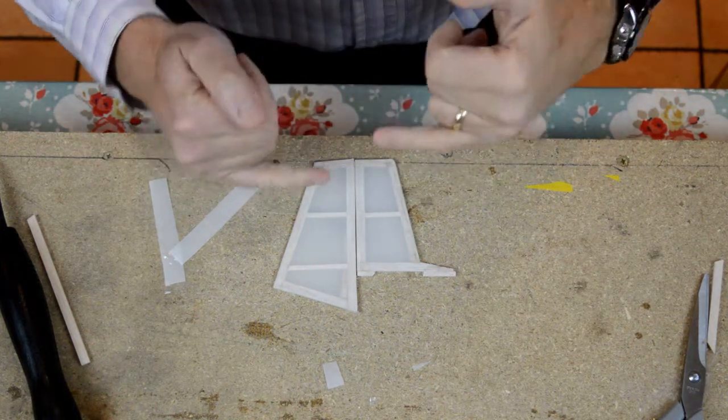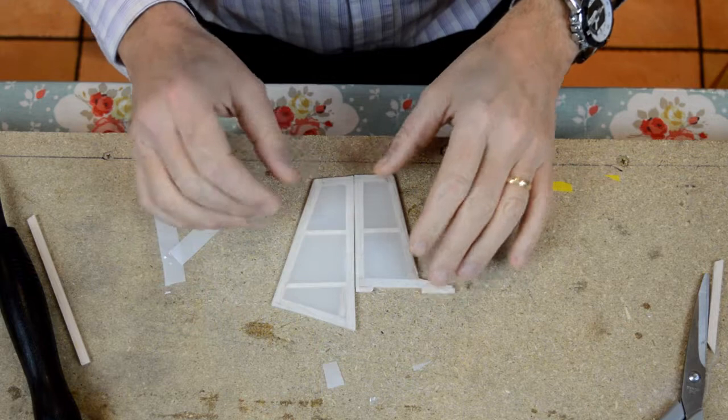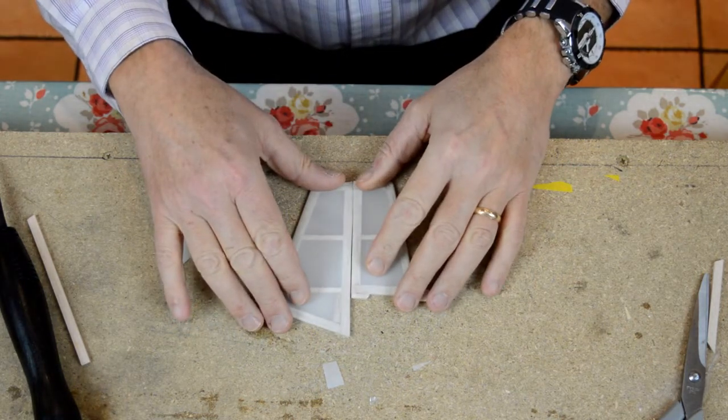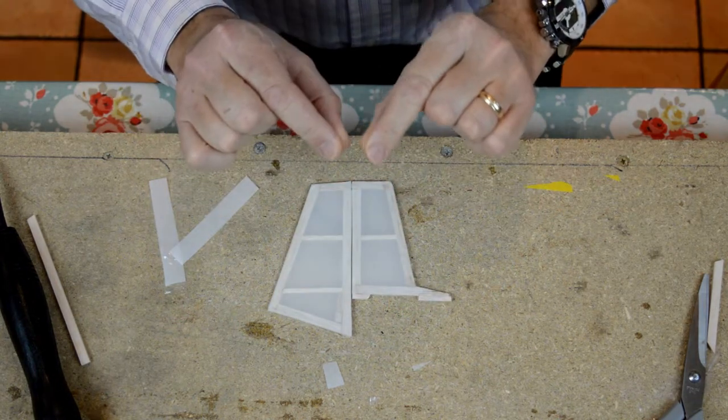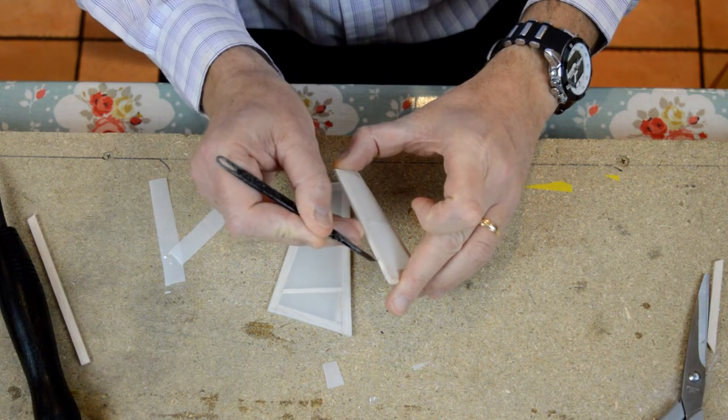I'm going to show you a fairly quick way to do it. You can buy a little plastic film called mylar which you can insert into the edges here.